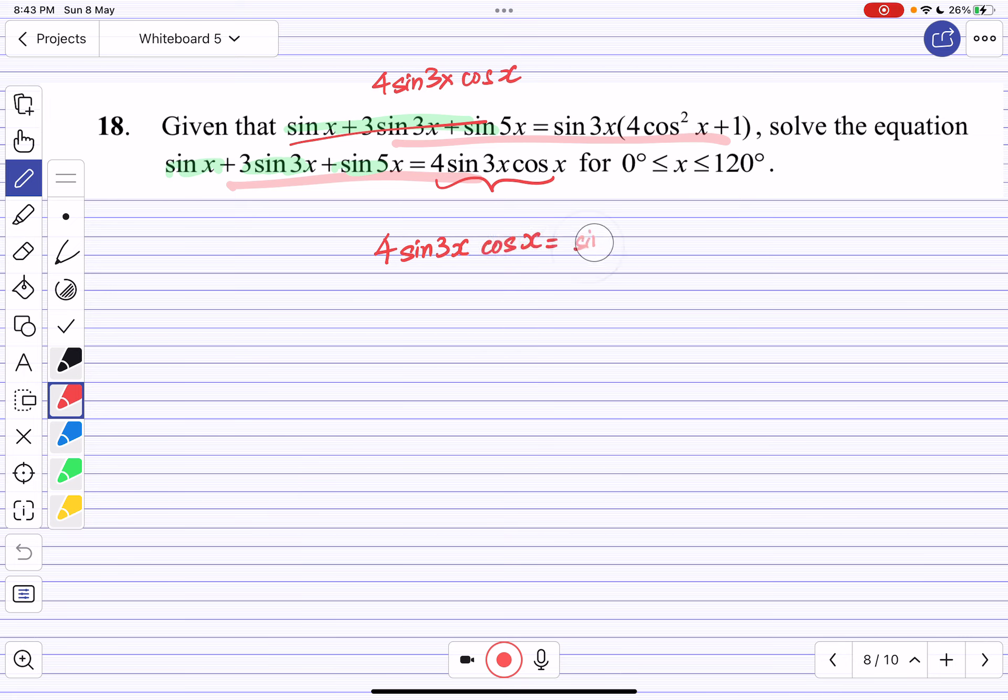So 4sin 3x cos x = sin 3x(4cos²x + 1). Now definitely what I want to do is make one side zero. Remember that even though there are common factors we cannot cancel them out because they might be zero.